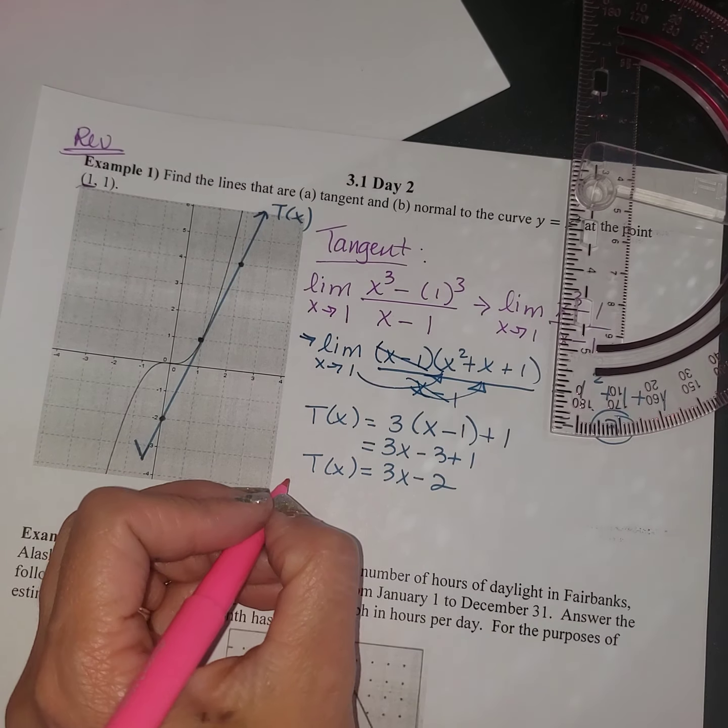So it says, answer the following questions by estimating slopes on the graph in hours per day. For the purposes of estimation, assume that each month has 30 days. So we know that there's a month that has 28 to 29 days, depending on the leap year or not. And we know that some months have 30 days versus 31. Let's just assume that the average month has 30 days. Letter A, it says, on about what date is the amount of daylight increasing at the fastest rate? What is this rate?